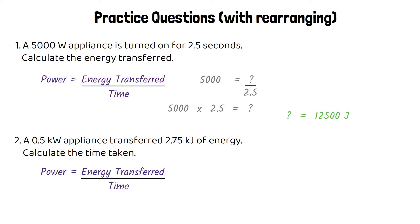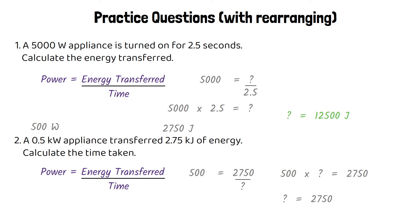For the second question, we need to convert the power rating from kilowatts into watts — 0.5 kilowatts is the same as 500 watts. And we need to convert kilojoules into joules — 2.75 kilojoules is 2,750 joules. Then we substitute into the equation: 500 for power equals 2,750 for energy transferred divided by time. Rearranging: 500 times time equals 2,750, and then time equals 2,750 divided by 500. That gives us a time taken of 5.5 seconds.